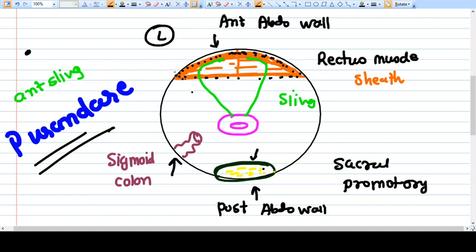So in the Purandare sling surgery, we create an anterior sling. From which we want to create this anterior sling? We use fascia lata for creating this sling. What we do is we just fix this sling on the anterior wall of the cervix to the rectus sheath of that side, like this.